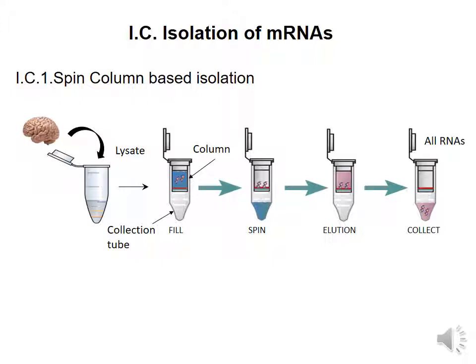With this spin column system, we perform a total RNA preparation. There is no way of differentiating between the different RNA molecules. So the final sample contains not only messenger RNAs but other types of RNAs as well. I will later show how we can selectively use only the messenger RNAs from these samples.